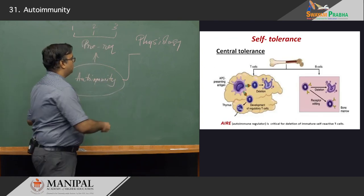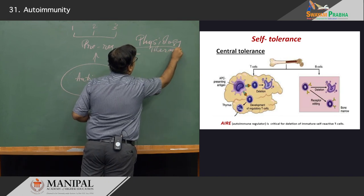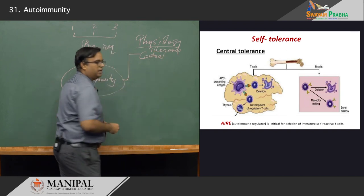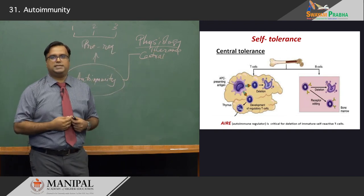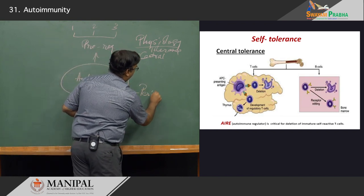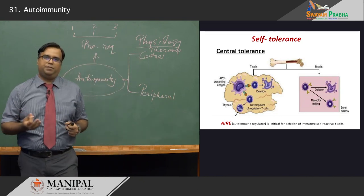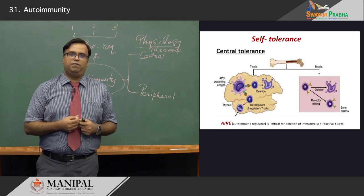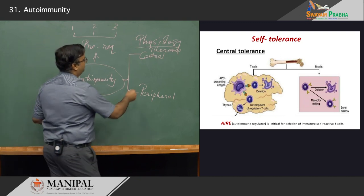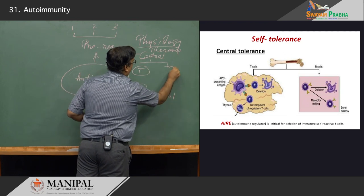Tolerance occurs in two important aspects. It happens in the central organs such as the thymus and in the bone marrow, where it is called central tolerance. Outside of that, it occurs in other tissues, where it is simply called peripheral tolerance. Central tolerance develops in the central lymphoid organs, and peripheral tolerance occurs in the periphery. The central lymphoid organs involved are the thymus and the bone marrow.